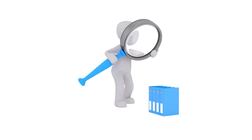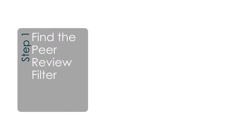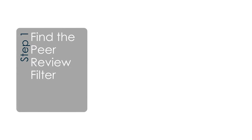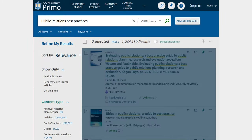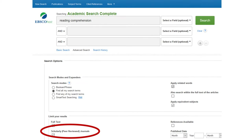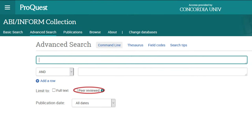There are three steps to finding peer-reviewed articles in the library. Step 1: Find the peer review filter. Look for the peer review check box when searching Primo or a library database. The wording will vary by the search tool.